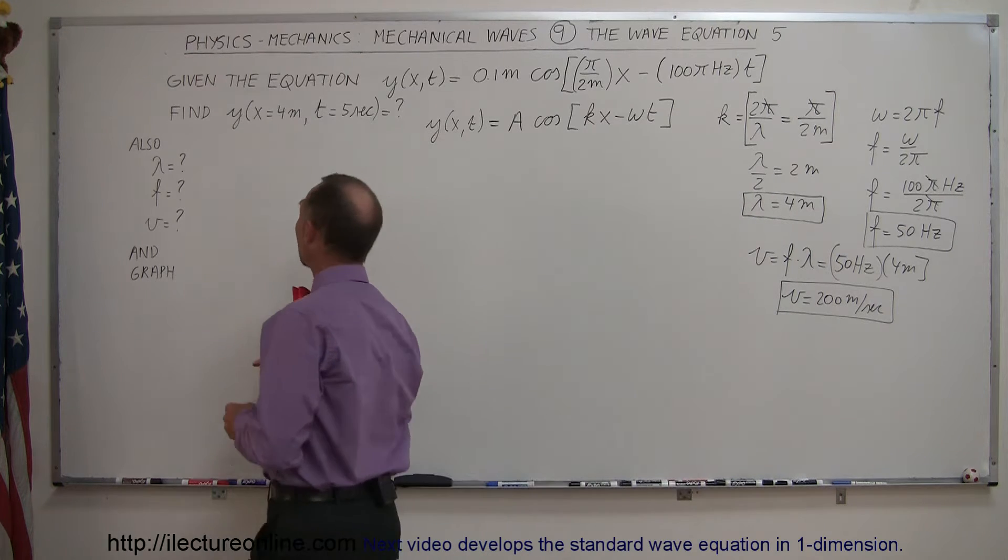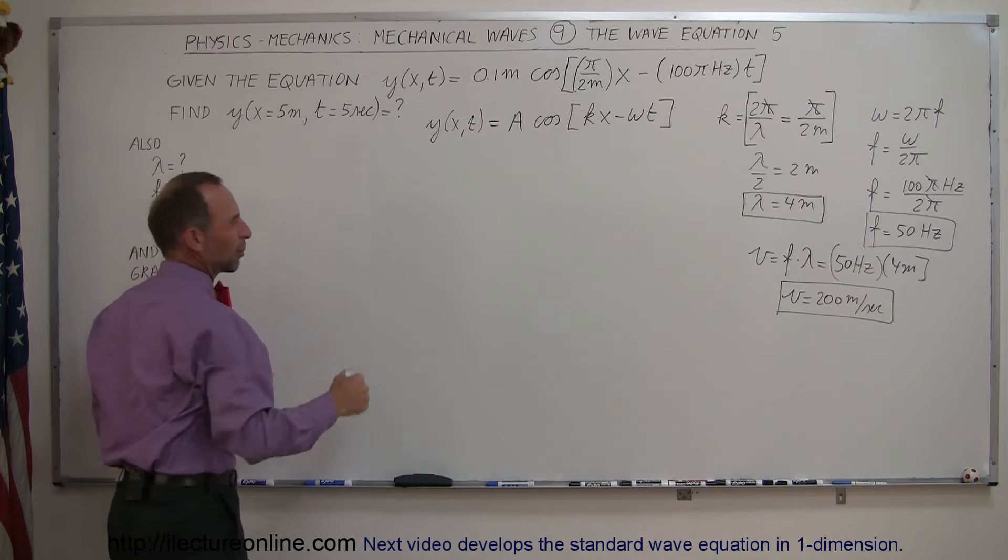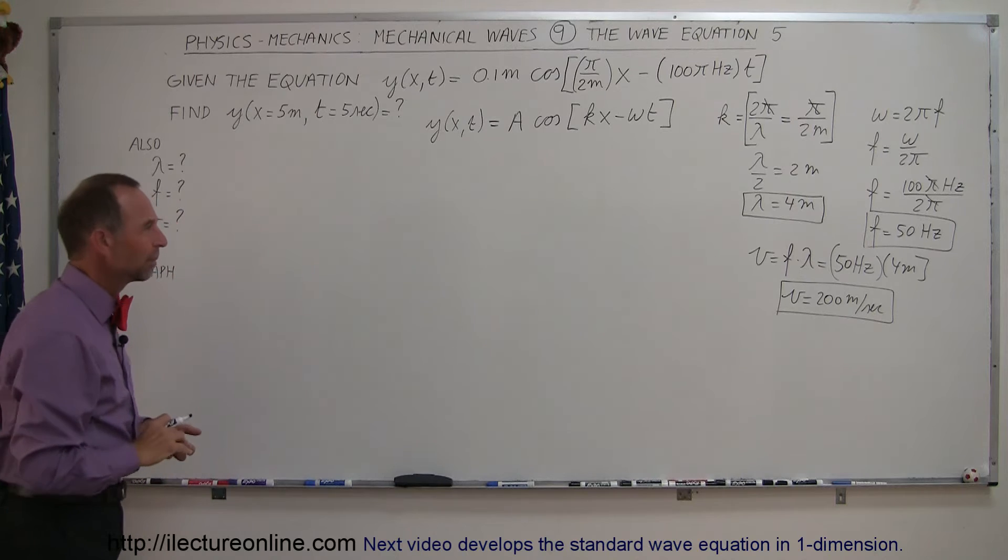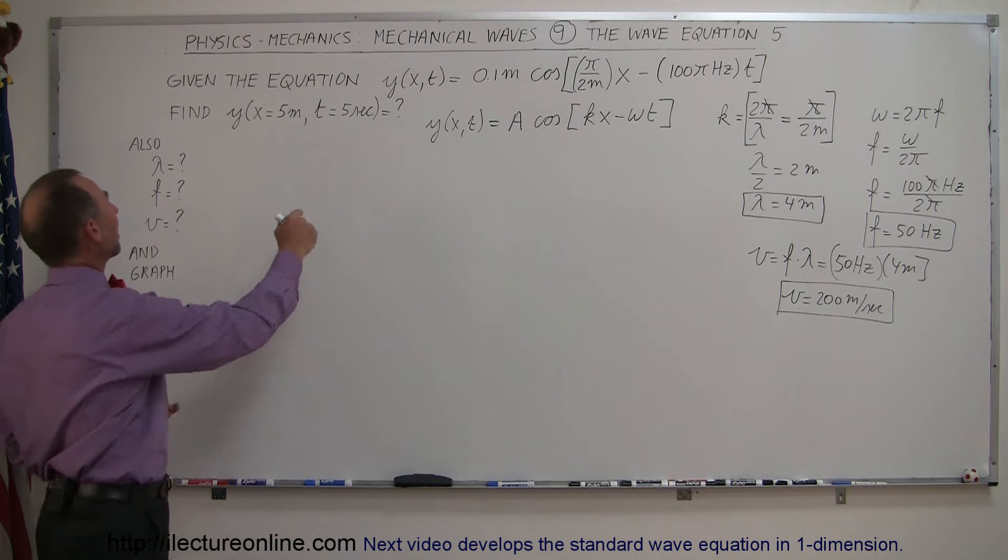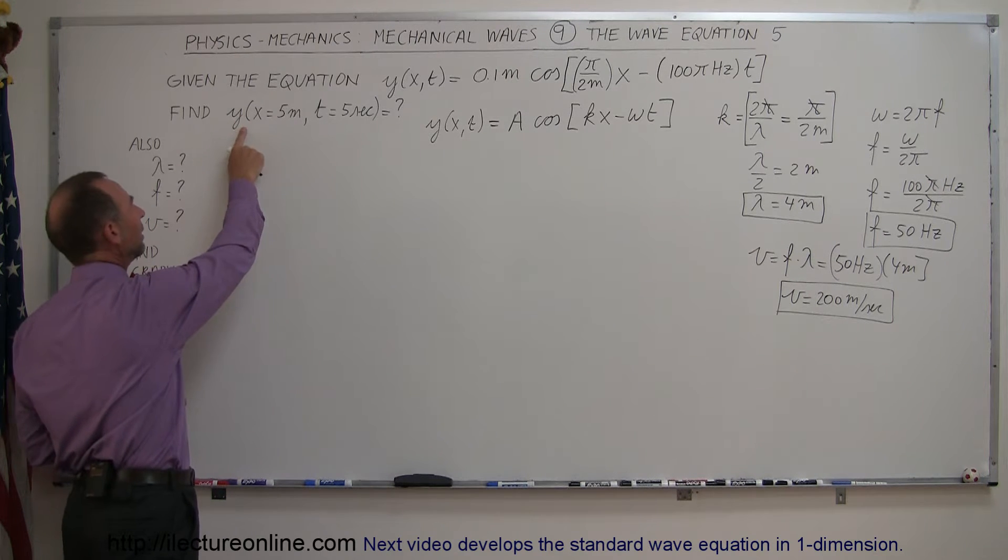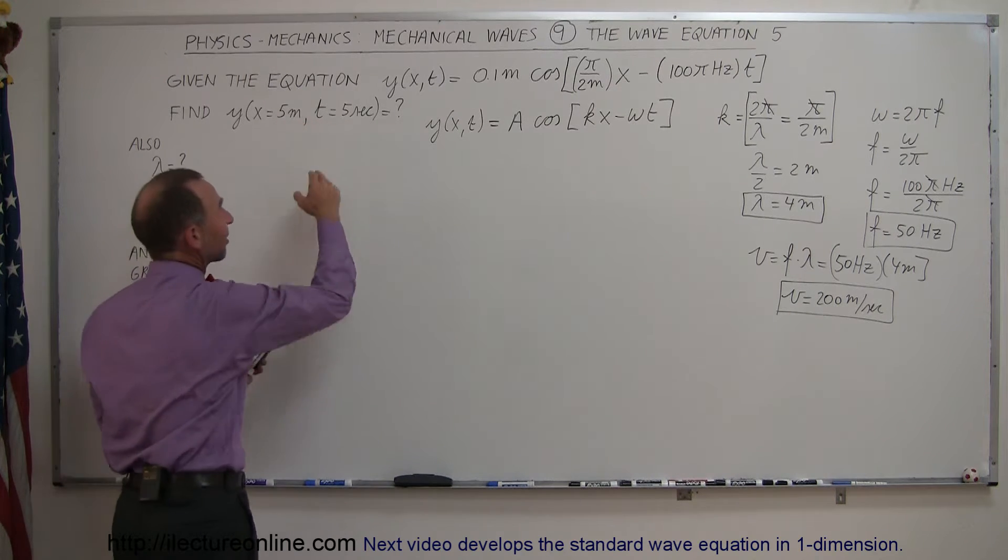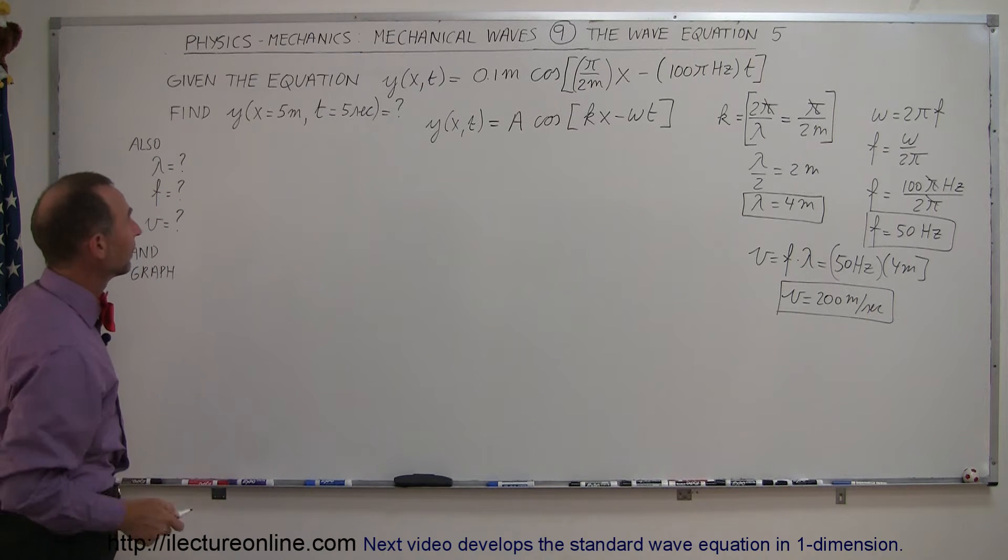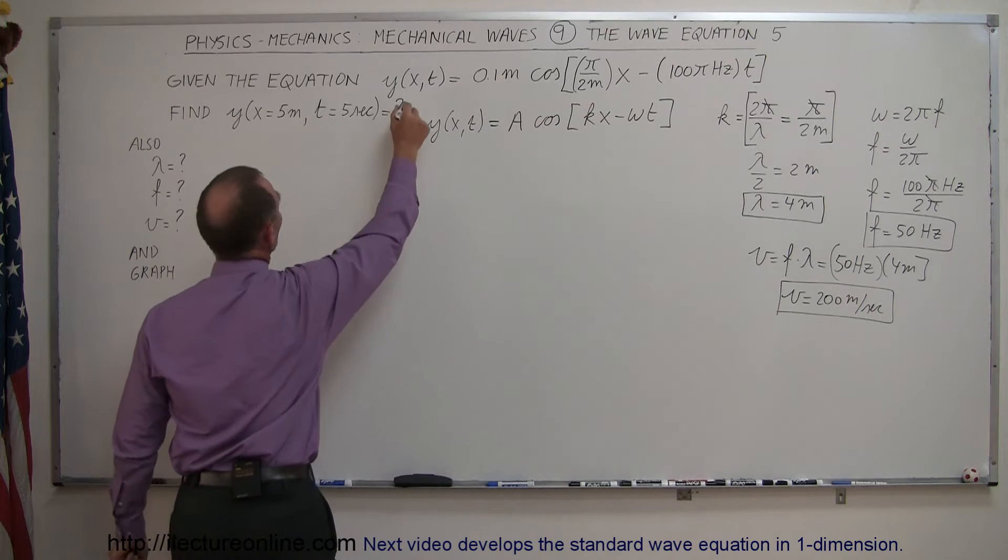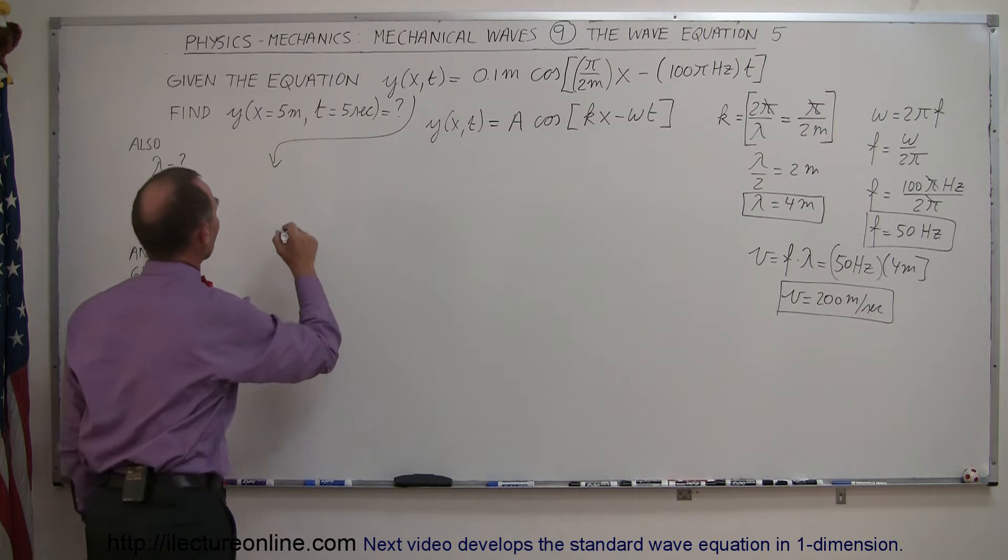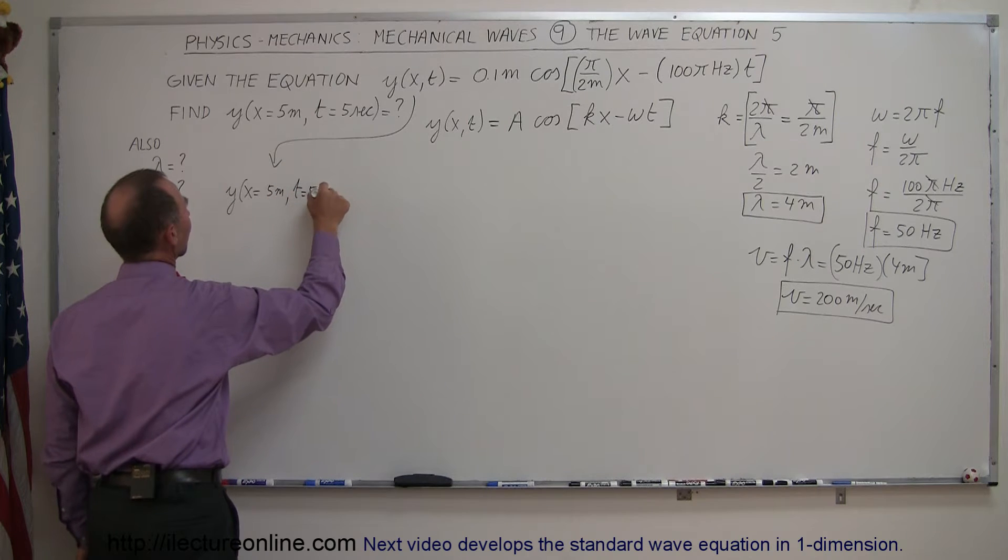Now, just to make things more interesting, I'm going to change this to 5 meters because I just realized my wavelength is 4 meters and I want to come out to a number that's a little bit different. The next thing we want to do is evaluate the wave function for y. In other words, we want to know what the displacement is at a position 5 meters away from the origin and 5 seconds after the wave started moving to the right.